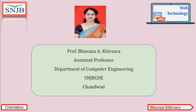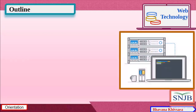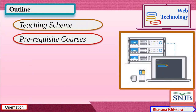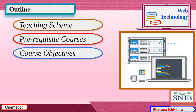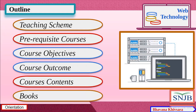I'm going to take the course Web Technology. The outline for today's orientation lecture — before starting our actual syllabus — we will see some basics that you should know about Web Technology. The outline for today's lecture is: Teaching Scheme, Requisite Courses, Course Objective, Course Outcome, Course Contents and Books, and a prerequisite test which will be considered as attendance for today's lecture.